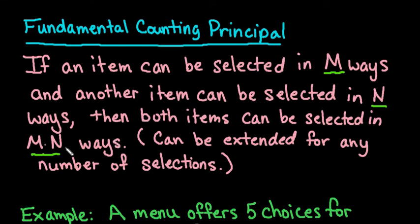like one of each category, then you can find the total by multiplying those values together, the number of ways that you can select it. And this can be extended for any number of selections. It doesn't matter how many times you do this. You could repeat it 10 times, 20 times, 30 times.